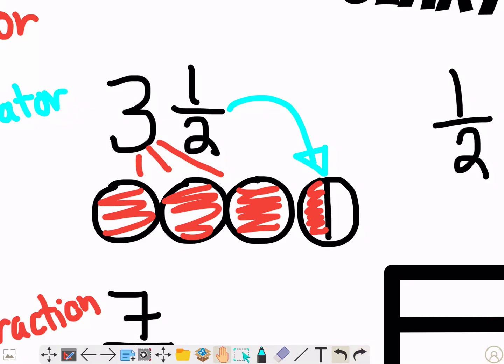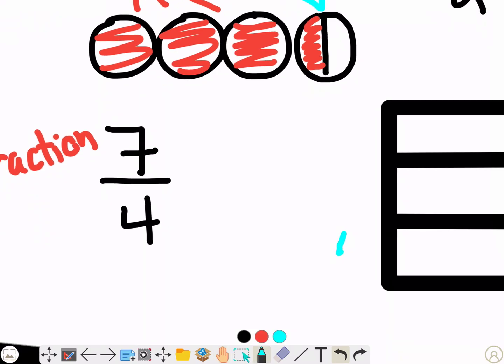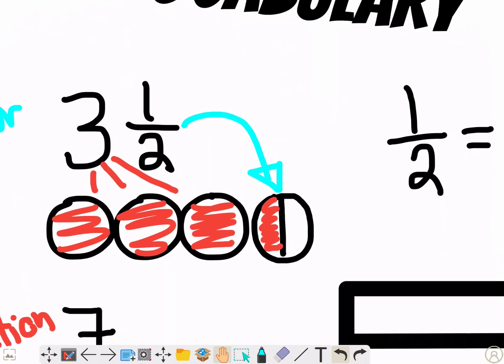It's like smushing together a whole number and a fraction together. This is called a mixed number. You're mixing up your wholes and your fractions together.